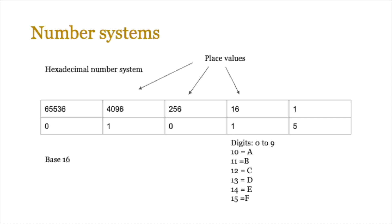The hexadecimal number system is base 16. We use it because it makes big numbers easier to manage — instead of writing long binary strings, we use shorter hexadecimal digits. Each hexadecimal digit equates to 4-bit binary, so one hex digit replaces a nibble, reducing characters. It uses digits 0 to 9 and letters A to F for 10 to 15, with place values of units, 16, 256, 4096, and so on.